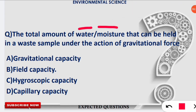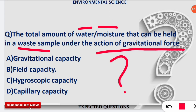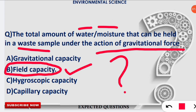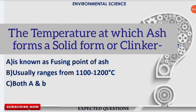The next question: the total amount of water or moisture that can be held in a waste sample under the action of gravitational force is known as what? The answer is field capacity — the moisture held in a waste sample under gravity is called field capacity.